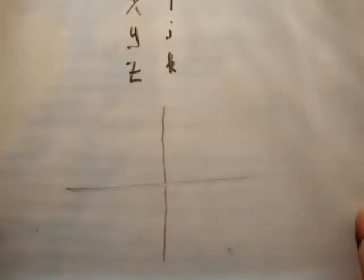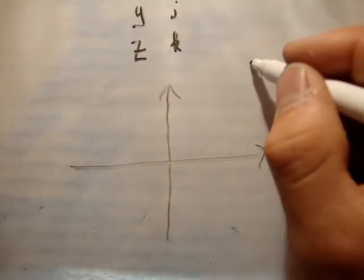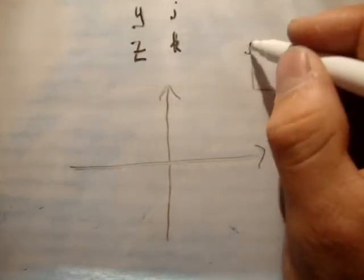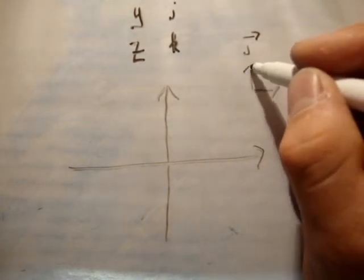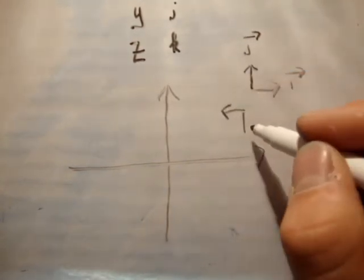And we would say, we would define, i-hat is that way, and j-hat is that way. I'll talk about the hat in a minute. If j is in that direction here. Now, you could say that the unit vector is pointing in different directions. That's not a big deal. But it's commonplace to do it this way.